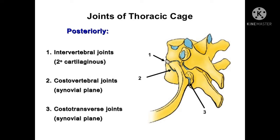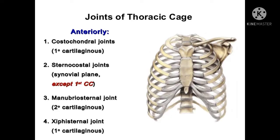On the anterior aspect of the thorax, we have the costochondral joints — they are primary cartilaginous joints. The sternocostal joints are synovial joints, plane variety, except the first costal cartilage. The manubriosternal joints are secondary cartilaginous joints. The xiphisternal joint is a primary cartilaginous joint.